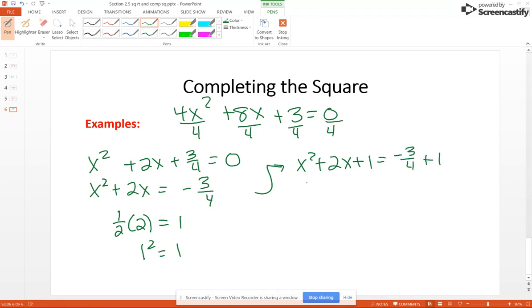And over here on the left side, we factor that as x plus 1 all squared. And over here negative 3 fourths plus 1 is positive 1 fourth. Use the square root principle. X plus 1 is equal to the square root of 1 fourths, plus or minus. And so we're going to have x plus 1 equals plus or minus. The square root of 1 fourth is 1 half.